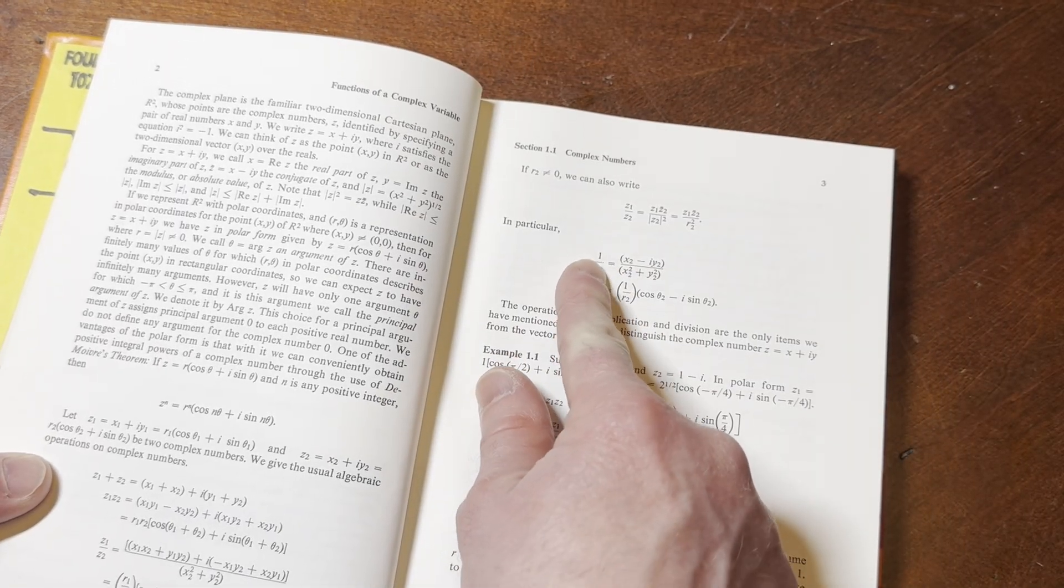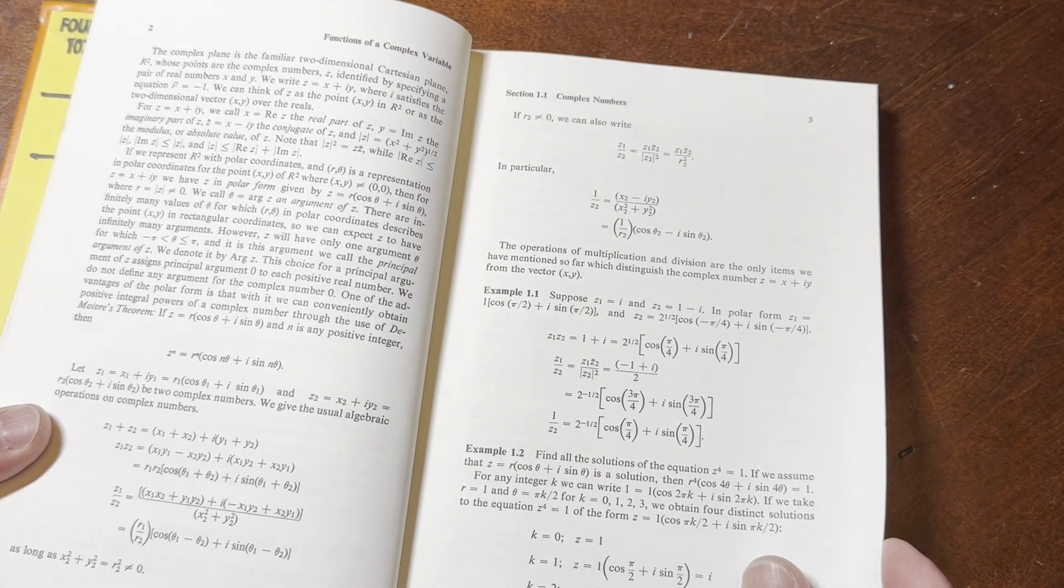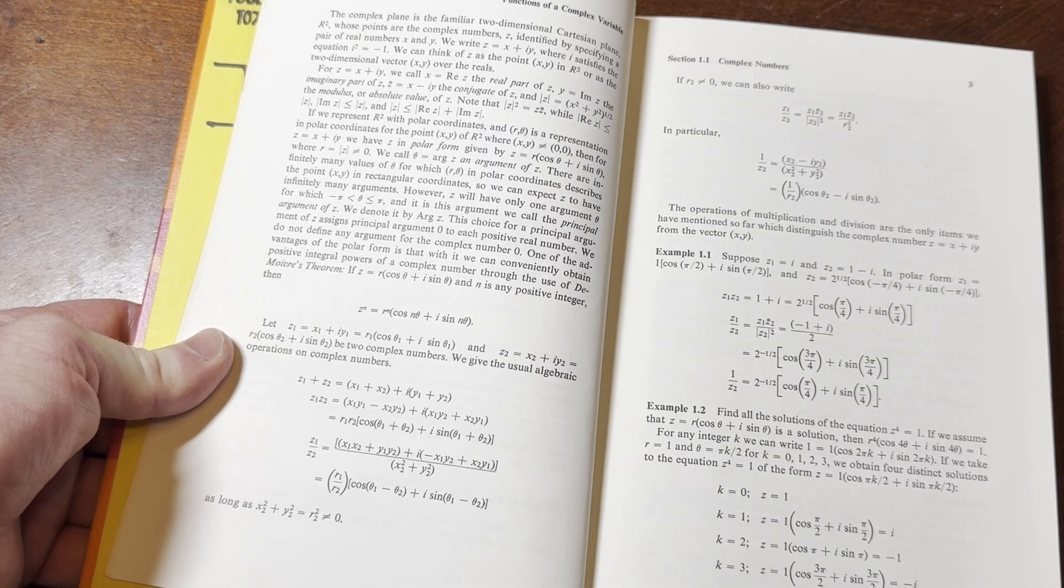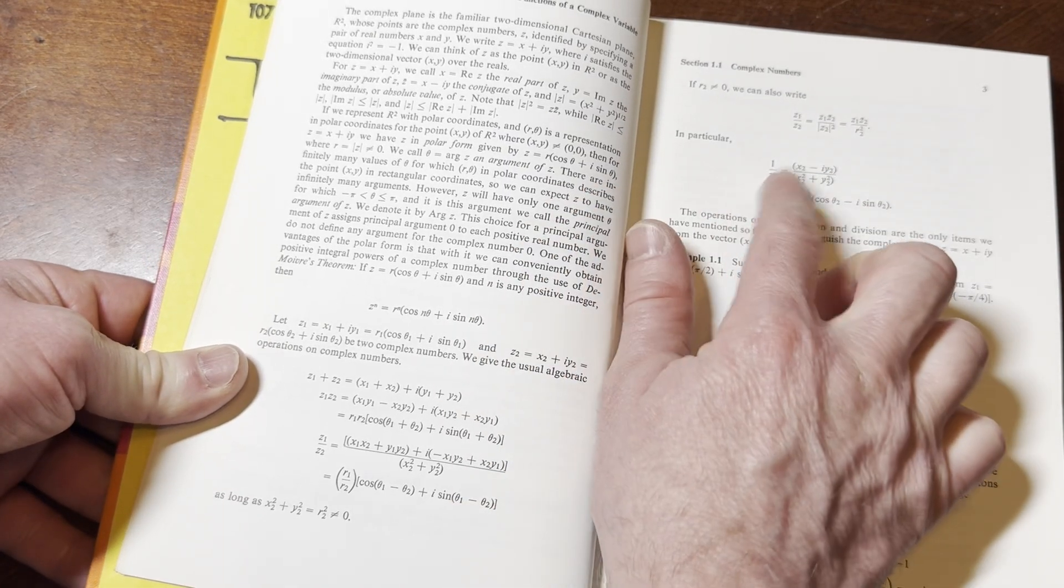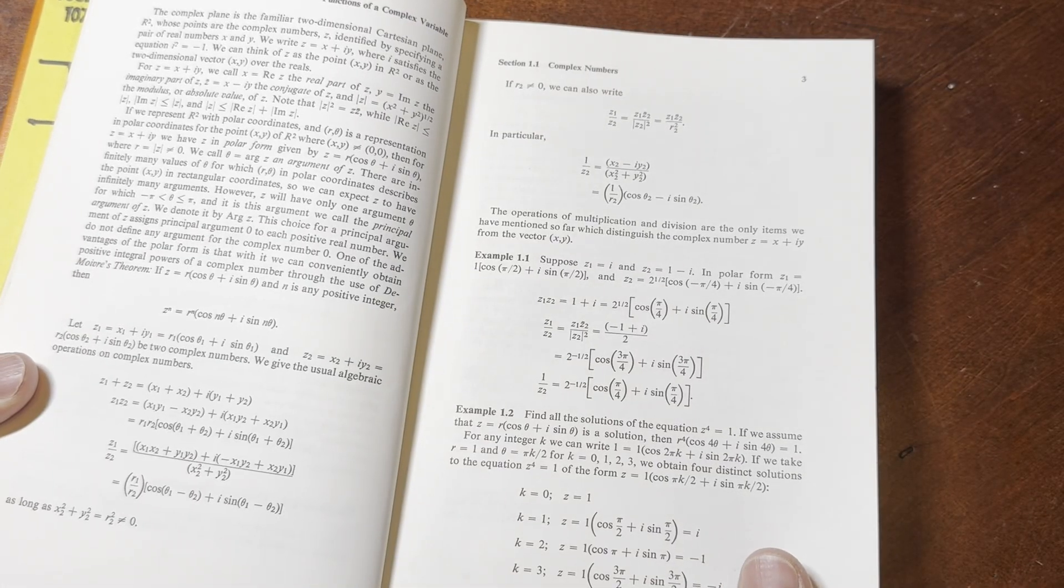Oh, 1 over Z. Yeah, 1 over Z2. What is that? I mean, work it out. So, I think I have a video. I think I have a video of, like, some of these derivatives, like of this.